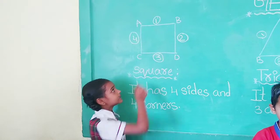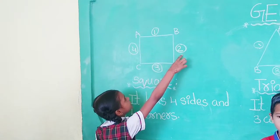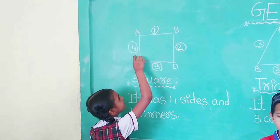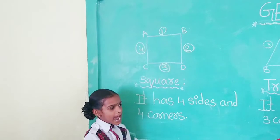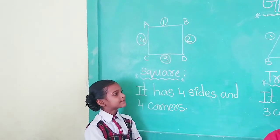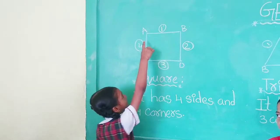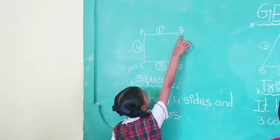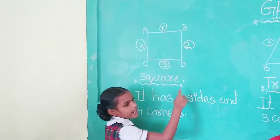It has 4 sides: Side 1, Side 2, Side 3, Side 4. And it has 4 corners: Corner A, Corner B, Corner C, Corner D.